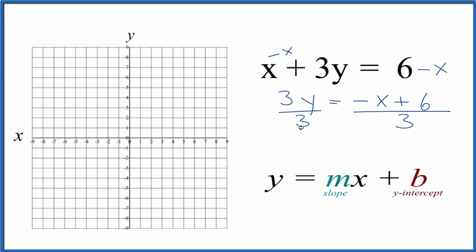So 3 over 3 is 1, 1y. That's the same as y. Then we have negative x over 3 plus 6 divided by 3 is just 2. So now we have this in slope-intercept formula.